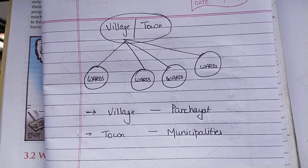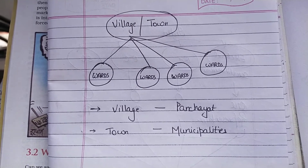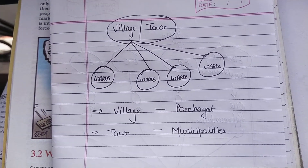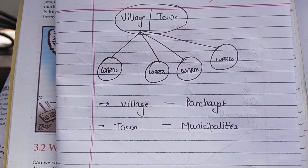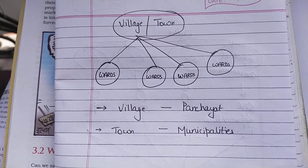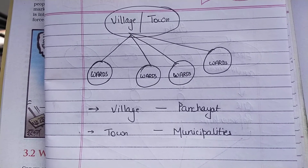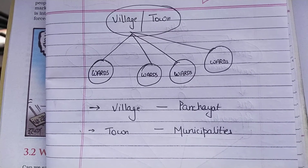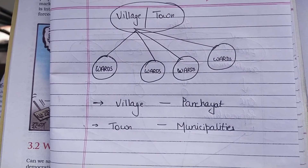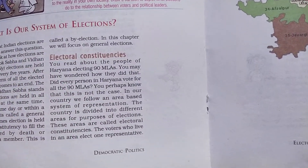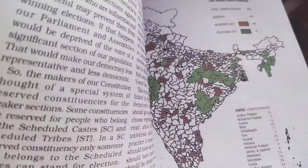From each ward we elect different members. For towns we have municipalities, and for villages we have the Panchayati Raj system. In this way our whole country is divided into electoral constituencies, assembly constituencies, and different wards, and through voting we choose representatives at different levels so that they can take decisions for our welfare.